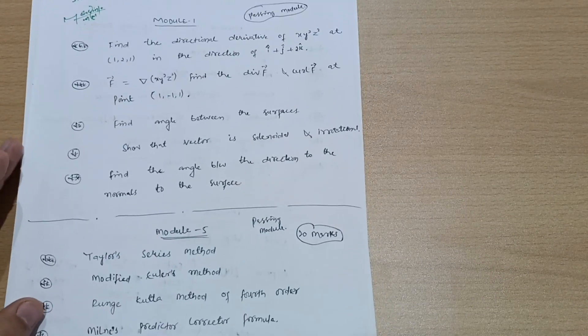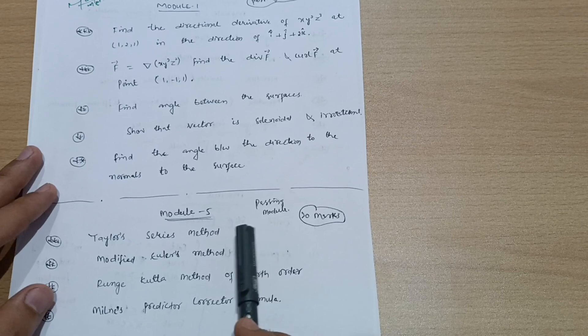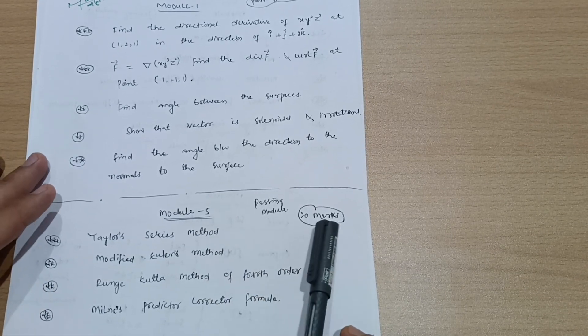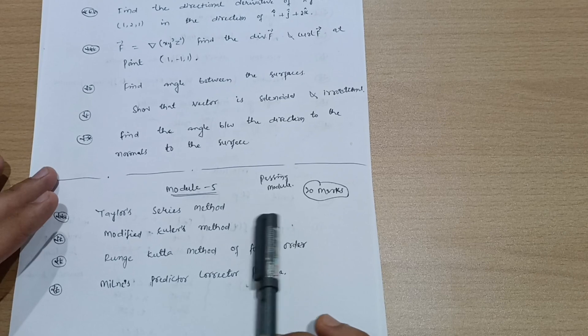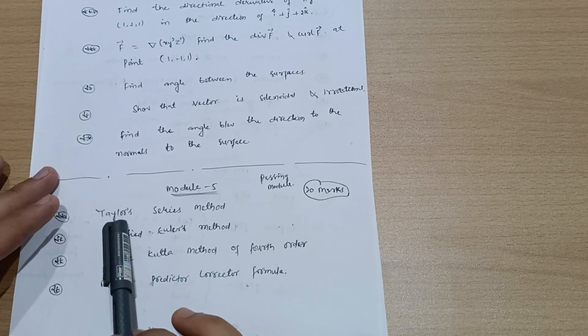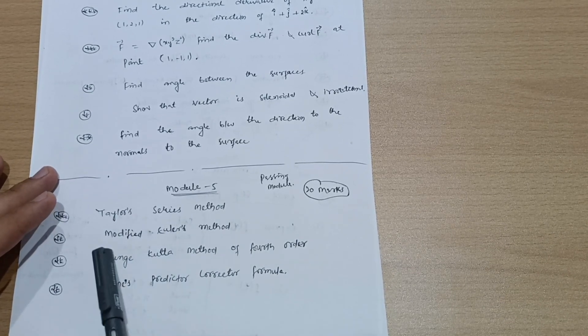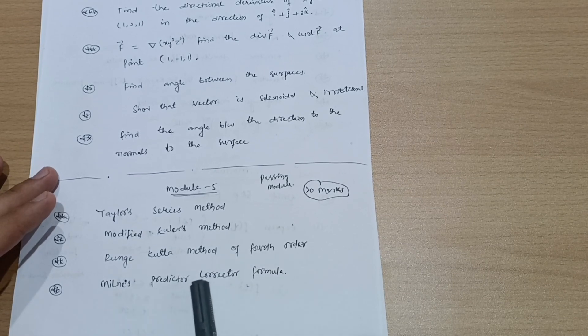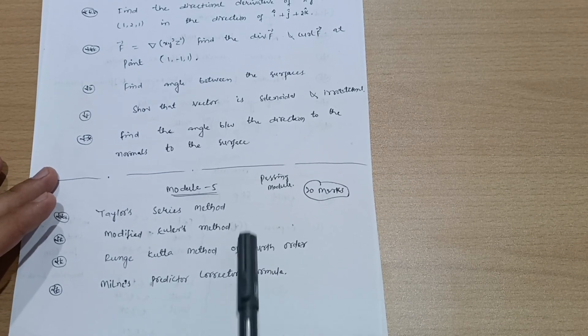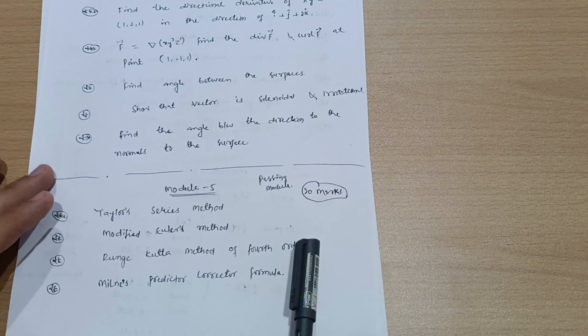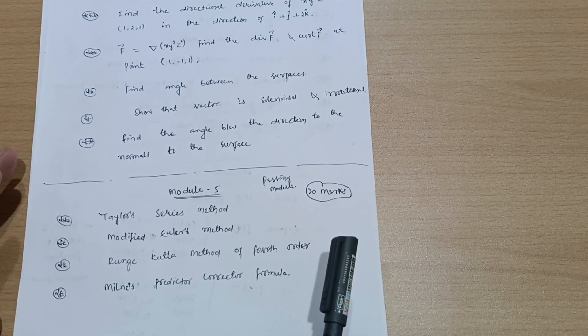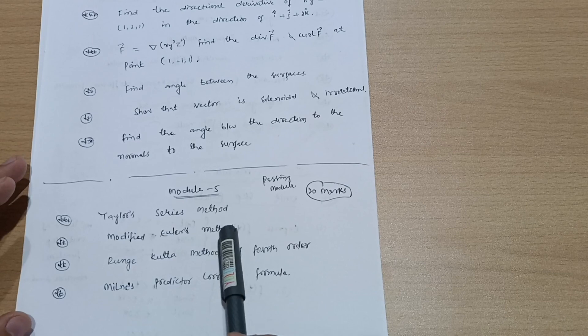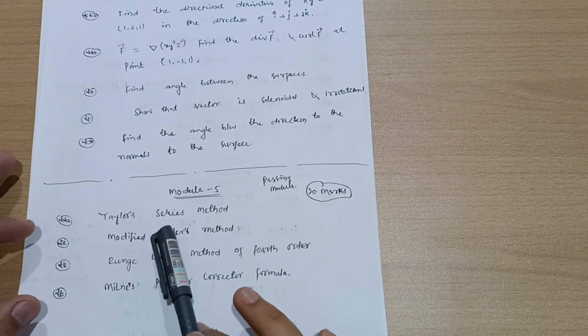Next passing module is module fifth. I'm telling you, these 20 marks are just in your pocket, so you should not leave any topic from this: Taylor series method, modified Euler's method, Runge-Kutta method of fourth order, and Milne's predictor-corrector formula. No need to worry about formulas as the handbook will be available in the examination.